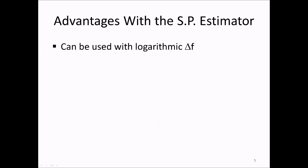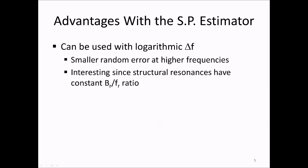You may wonder why we are interested in the smoothed periodogram estimator when we already have another good estimator, the Welch estimator. There are some advantages with using the smoothed periodogram estimator. First, it can be used to obtain spectral densities with a logarithmic frequency increment. This results in smaller random error at higher frequencies, which is interesting since the spectral densities we measure on structures are results of resonances with bandwidths proportional to the natural frequencies. A logarithmic frequency increment gives constant resolution of resonances, and lower random error at higher frequencies while maintaining the frequency resolution needed to resolve the resonances.